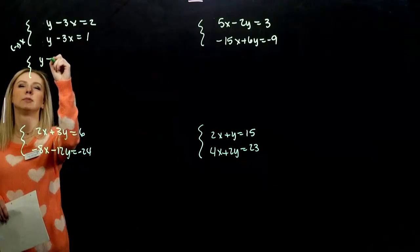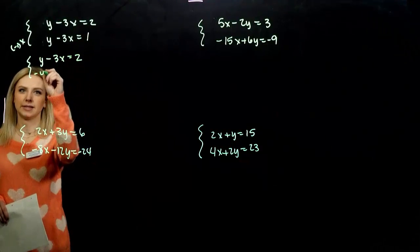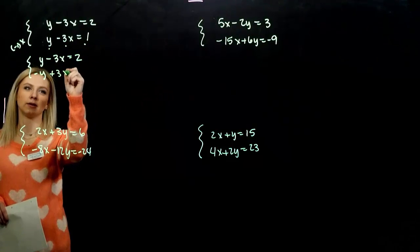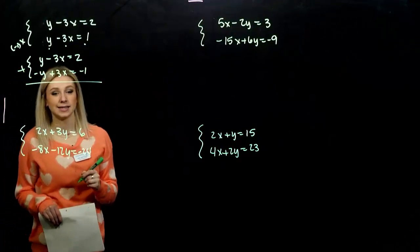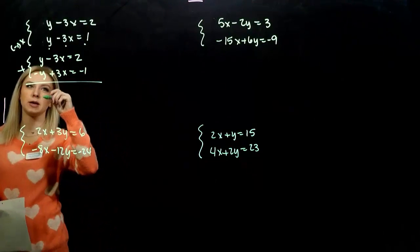So, our equivalent system, first one didn't change. Second one, every single term needs to be multiplied by a negative. Now, when we do that, if we add them together, the y's are going to be gone.